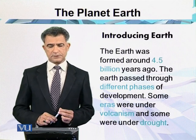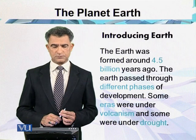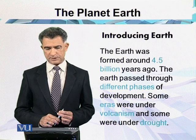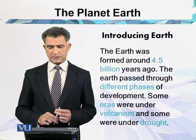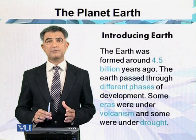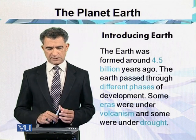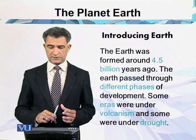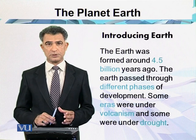This planet, Earth, was formed around 4.6 billion years ago. The Earth passes through different phases of development. Some eras were under volcanism and some were under drought.